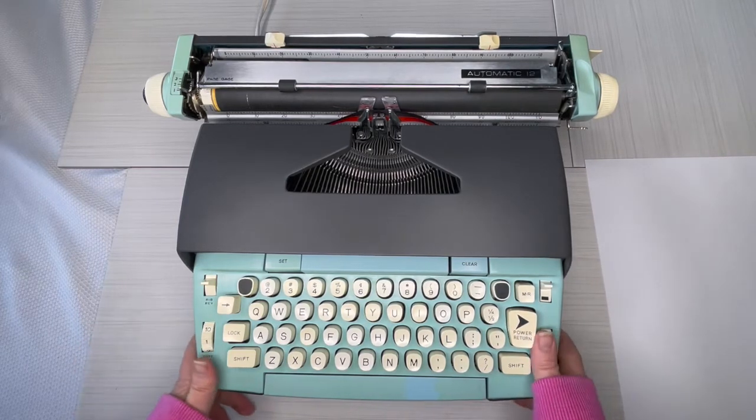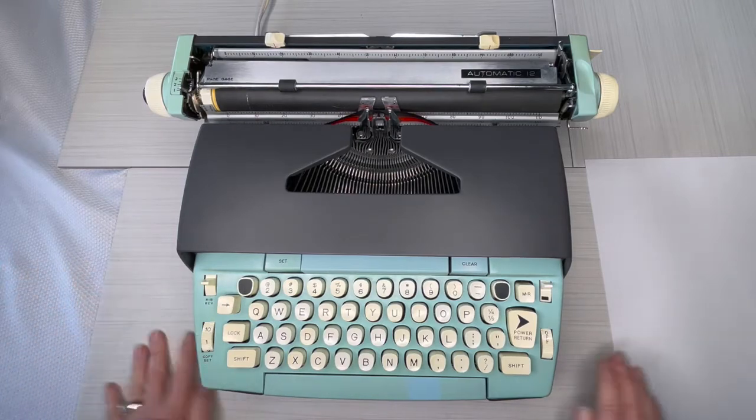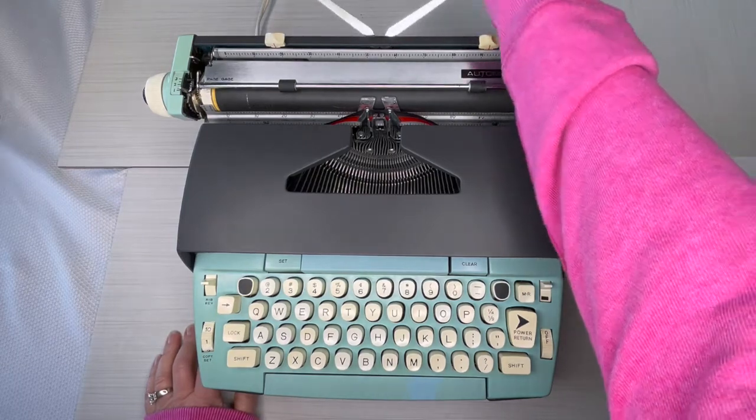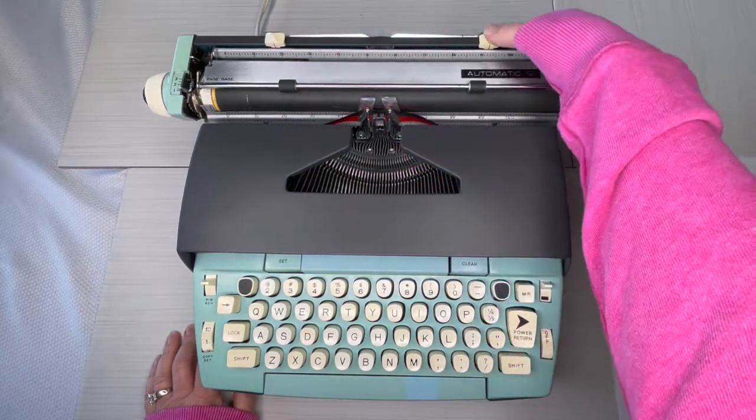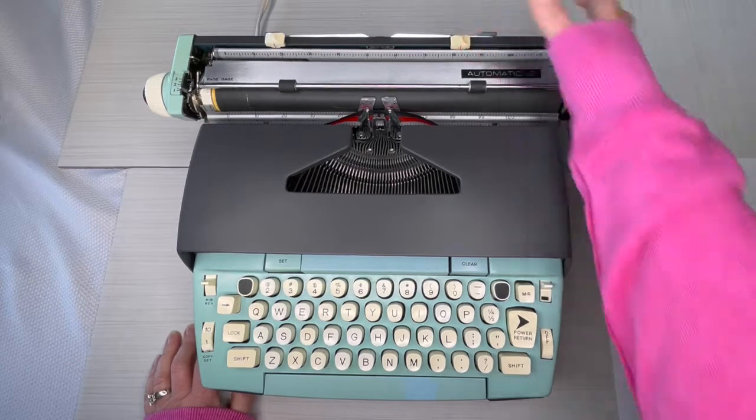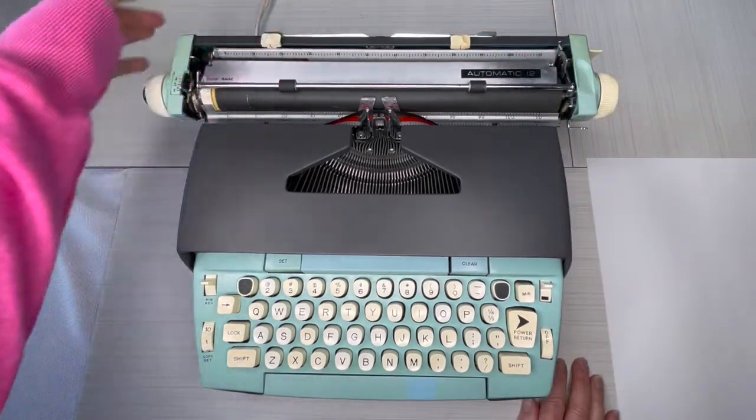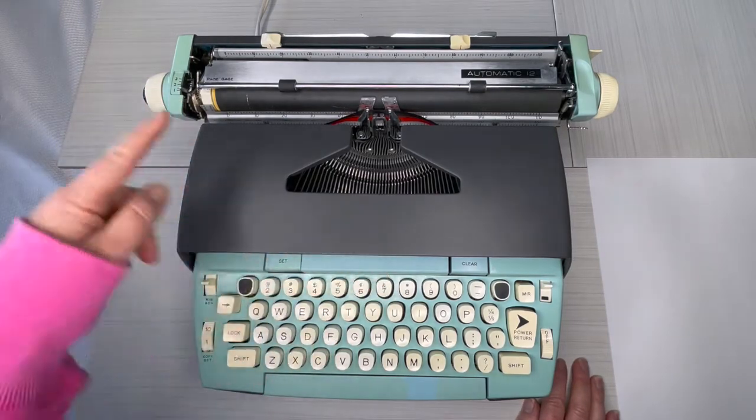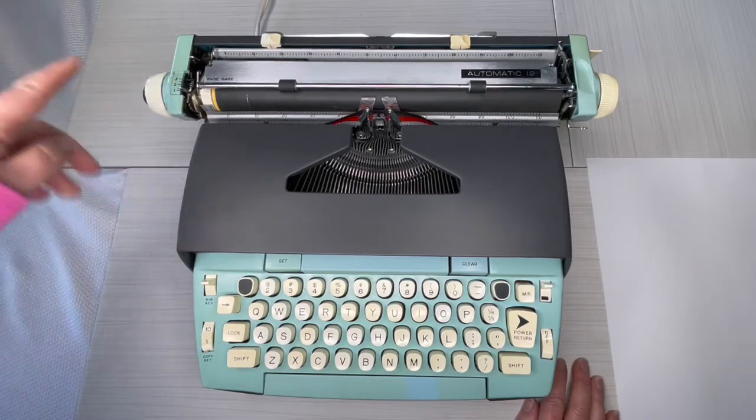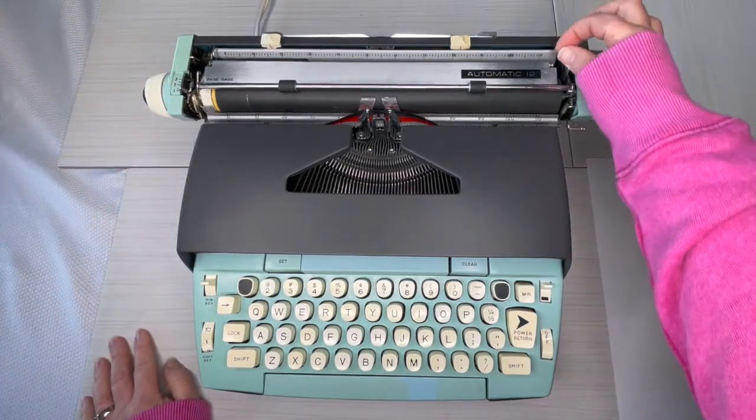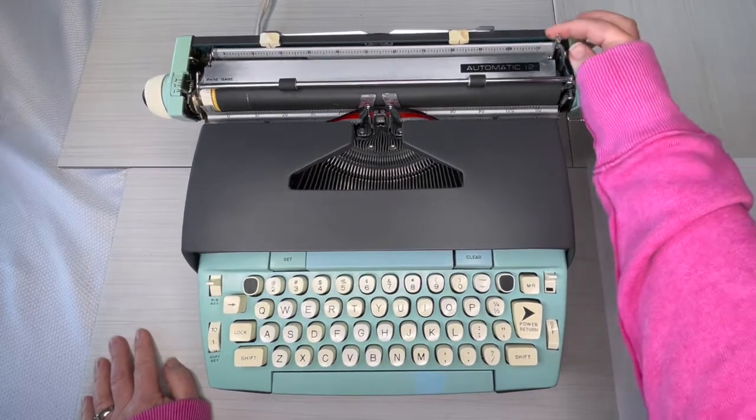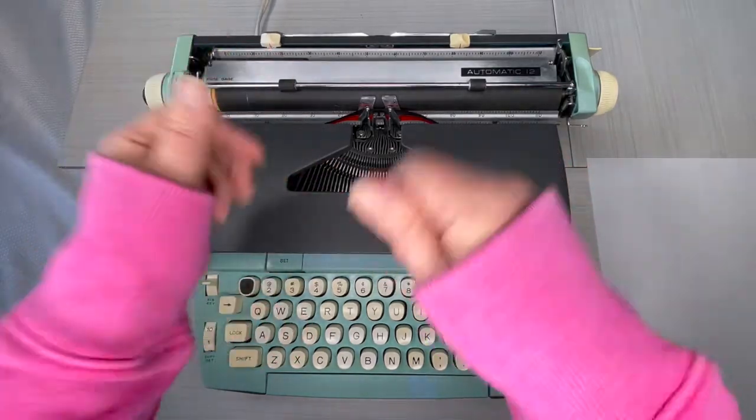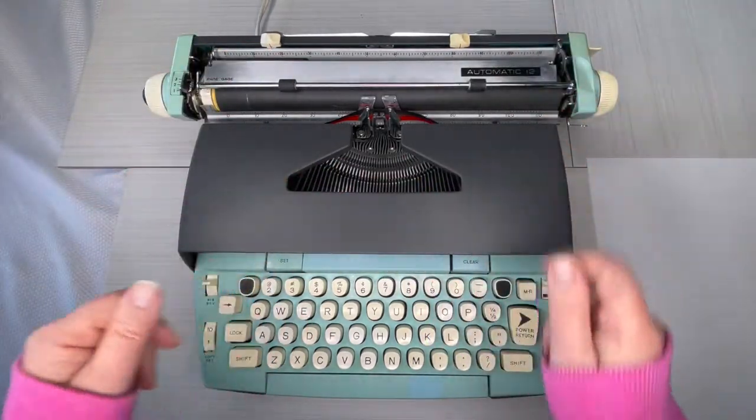Sorry for the slow moving start on this, I am drowsy today. I need a nap. Okay, paper holder voila. Margins, press and drag, there you go. This is your line selector, so when you hit that return handle, it's gonna advance either one, two, or three lines depending on where you set it. On this side, this little doohickey releases the tension on your paper so that if you load it and it's crooked, you can fix it.